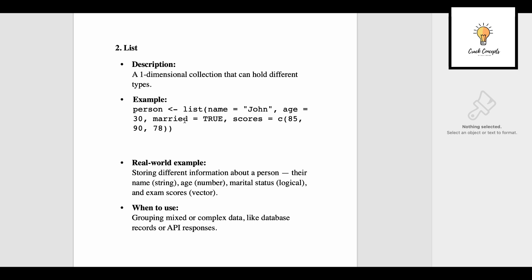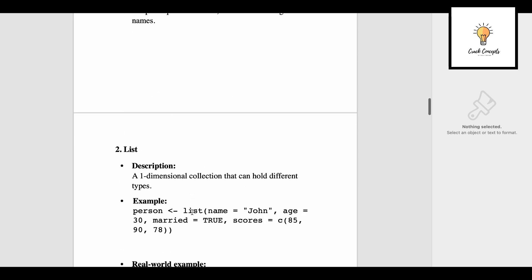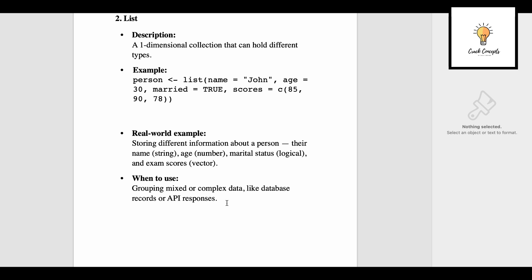This is how we create a list: person arrow list, and in brackets we specify name equal to John, age equal to 30, married equal to TRUE, scores equal to a vector. We can have different data types in a list. A real-world example: you can store different information about a person like their name, age, marital status, exam scores. Use a list for grouping mixed or complex data like database records or API responses.